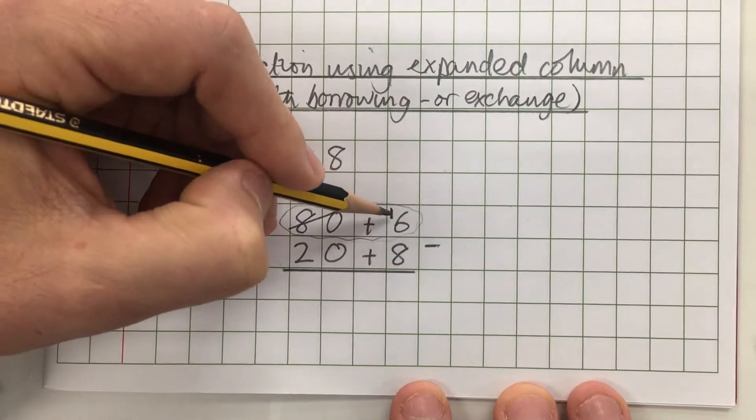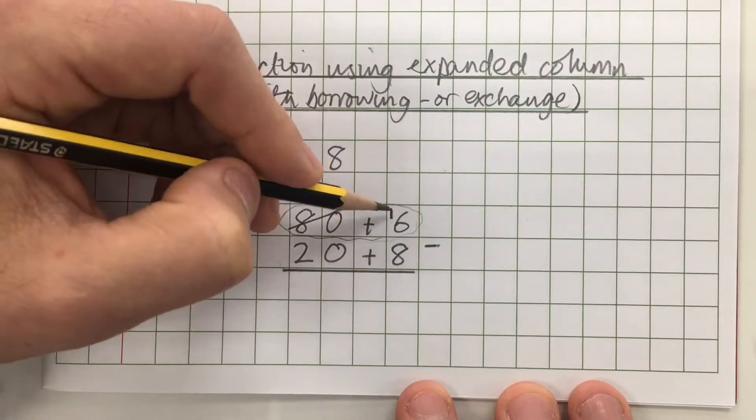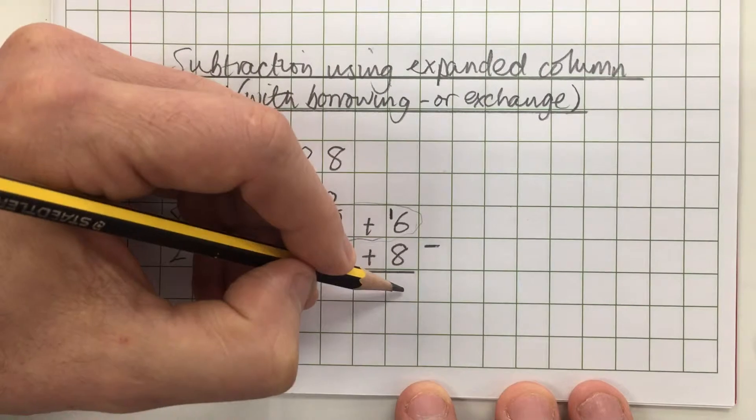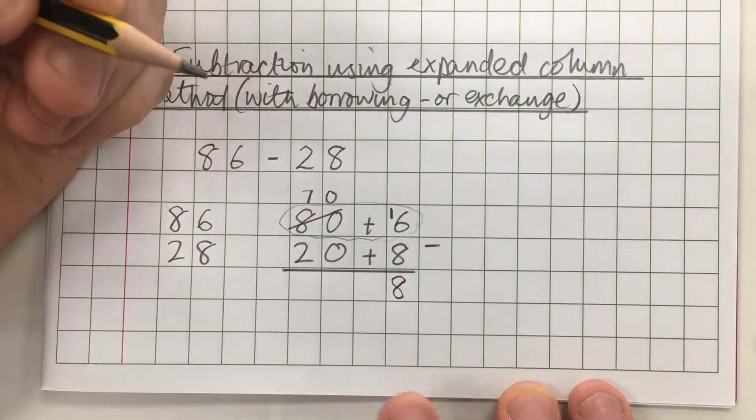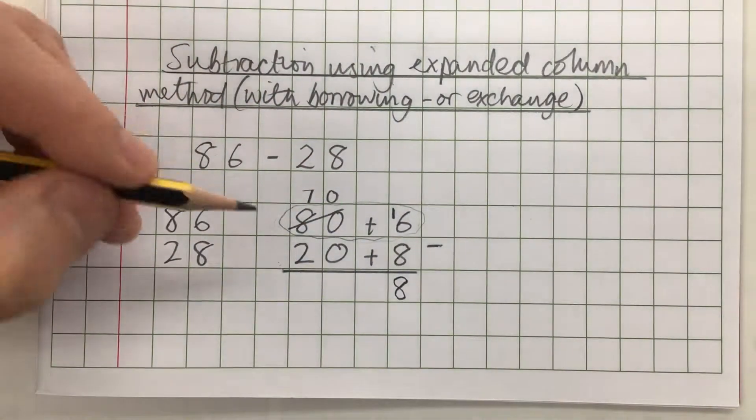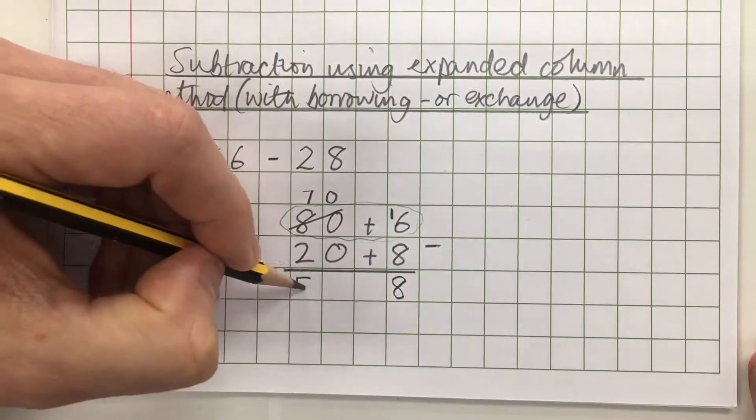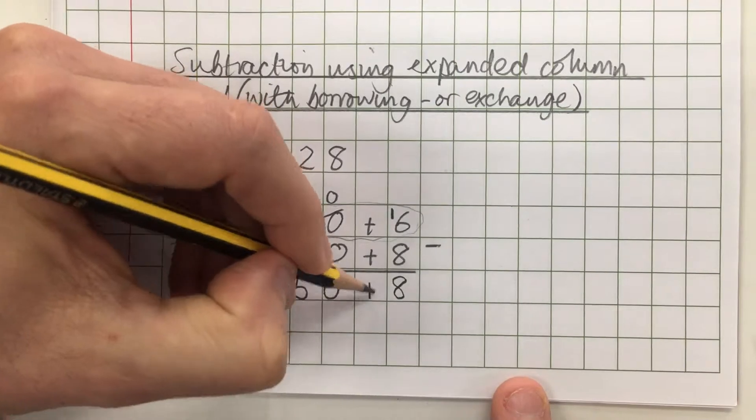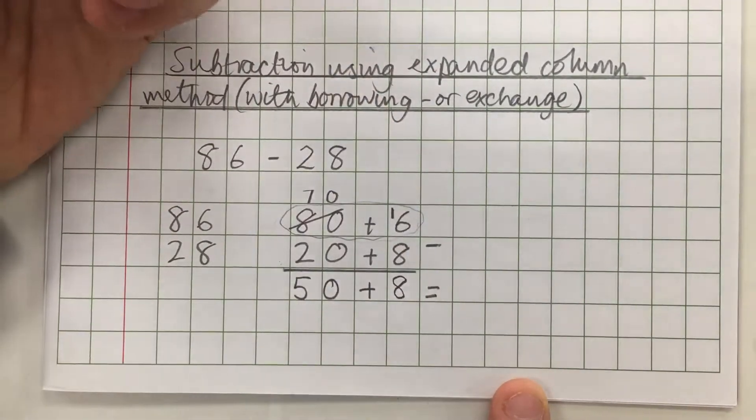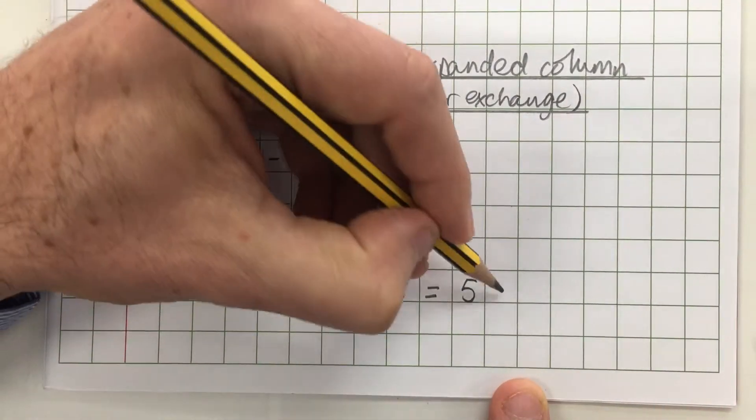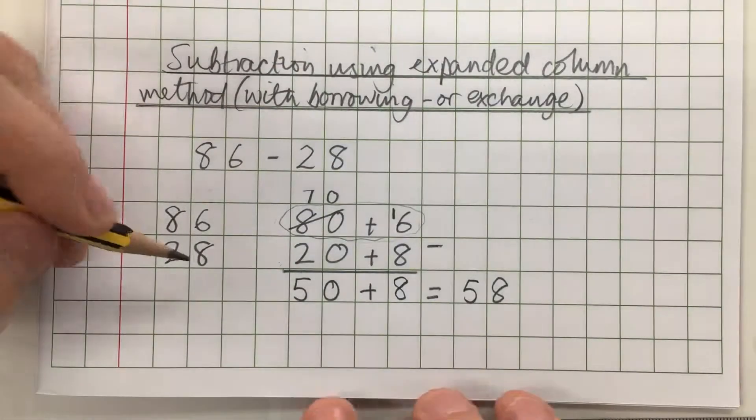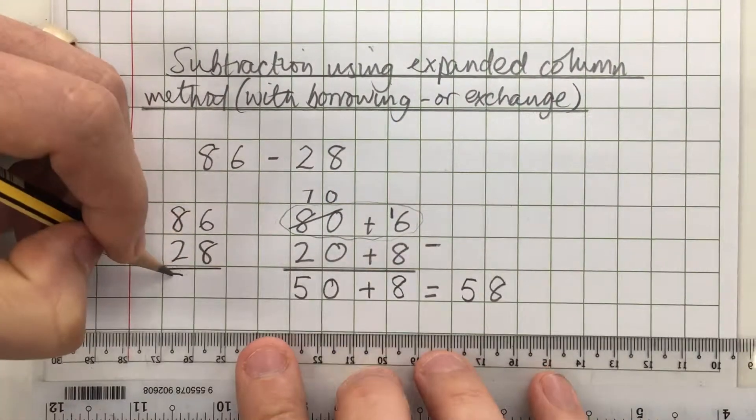So now I think I can do this ones column - 16 minus 8, I know that's 8. And here I've got 70 minus 20, well 7 minus 2 is 5 so 70 minus 20 is 50, and I'll put the plus sign in there giving us 50 plus 8 is 58 which I can write down here as well.